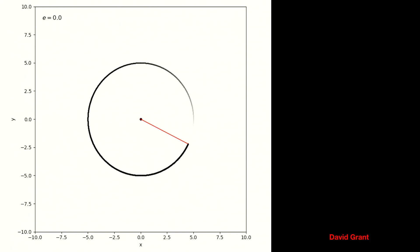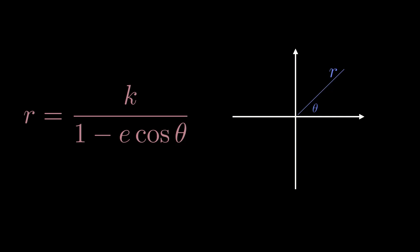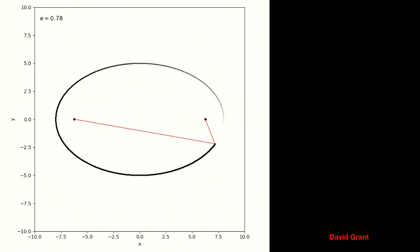By far the simplest of the conic sections is the circle, which happens when E is 0. When E is 0, the entire denominator goes to 1, meaning the radius is a constant — just as we know for a circle, which has a completely constant radius as we trace out its path. What about increasing the difficulty just a little bit? If instead of setting E to 0 we set it to some number between 0 and 1, we get something elongated — and we start tracing out the beautiful shape of an ellipse.